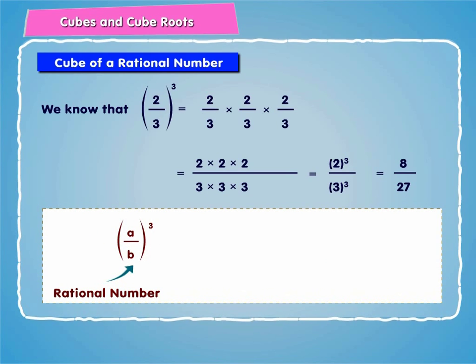Therefore, we can say that cube of a rational number a by b is the cube of the numerator a divided by the cube of the denominator b.